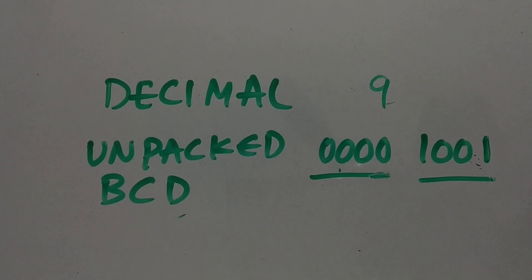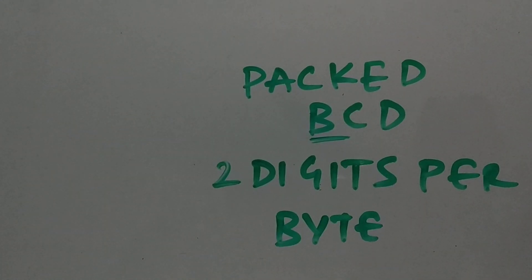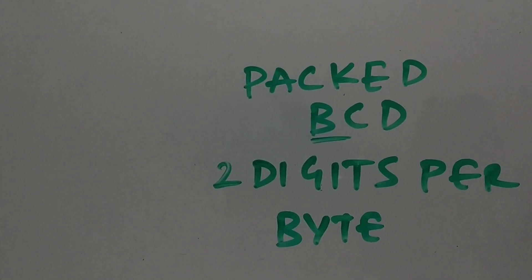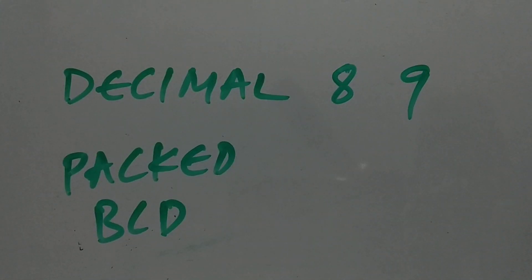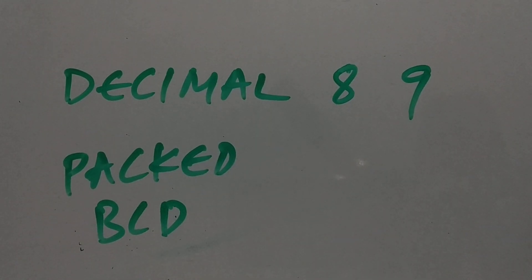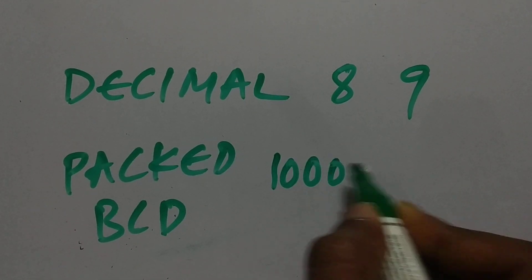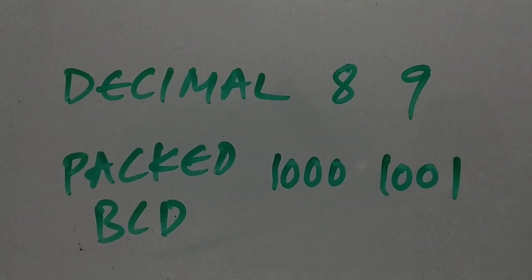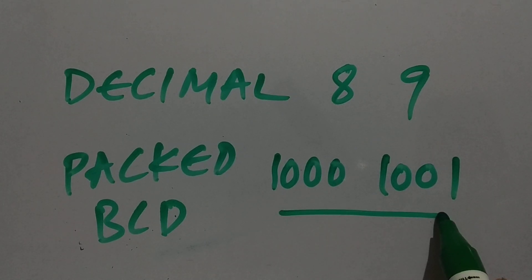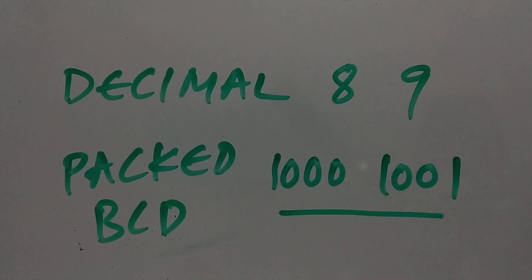Now let's go with packed BCD. Here it is packed, so two digits per byte. Let's take an example of decimal 89. It is represented as 1000 1001. So per byte, we are able to represent two digits. We are packing more digits in a single byte, so that's why it's called packed BCD.